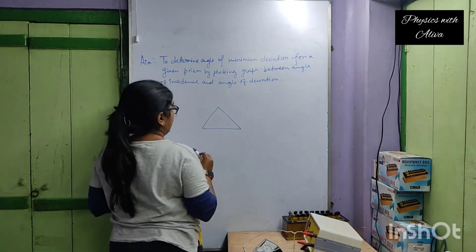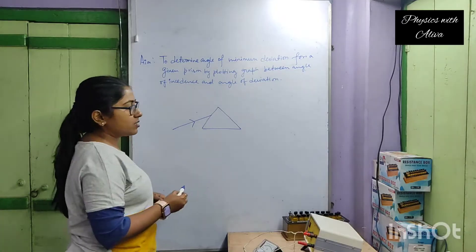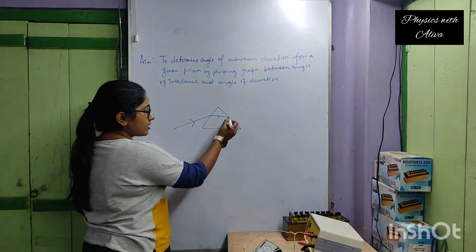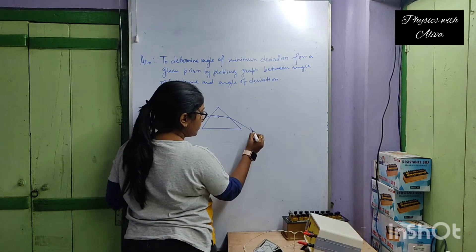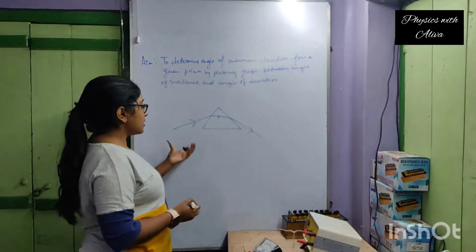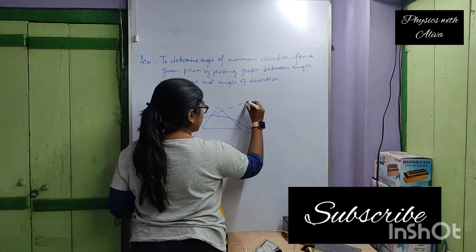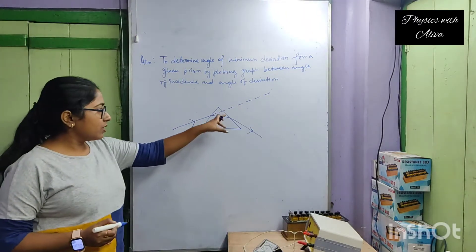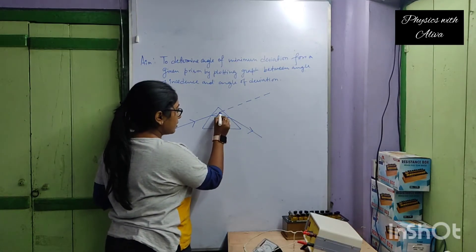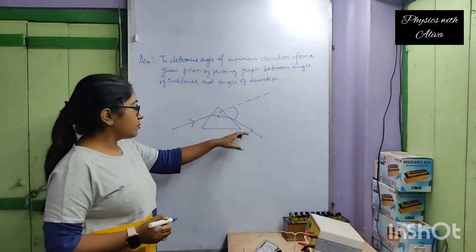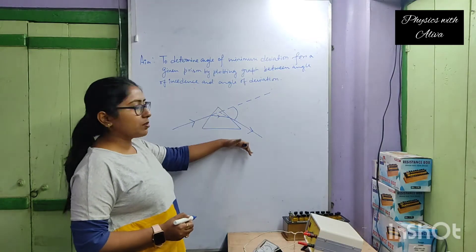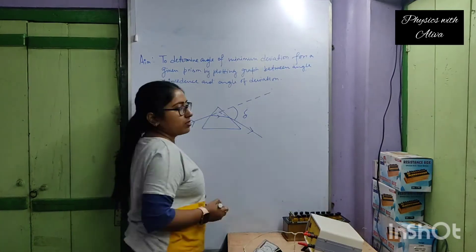This is a prism. Suppose this incident light is falling on this side of the prism. Refraction occurs and at the second surface, again refraction occurs. So two refractions occur at the two surfaces of the prism. If there is no prism, the incident ray will follow a straight path. Due to the presence of the prism, the emergent ray bends. So the angle between the incident ray and the final emergent ray is known as the angle of deviation.